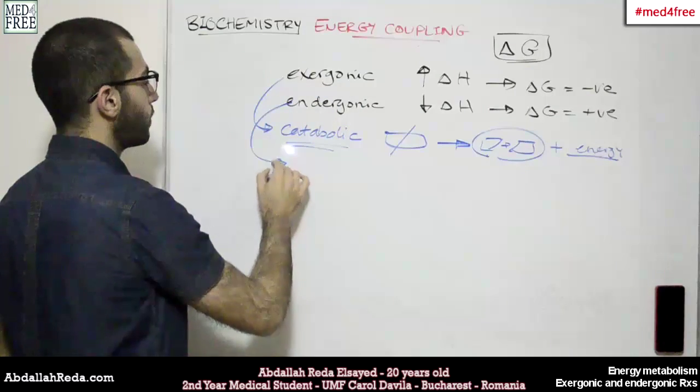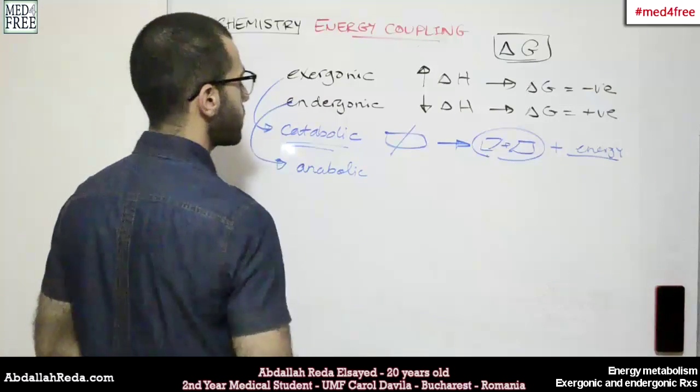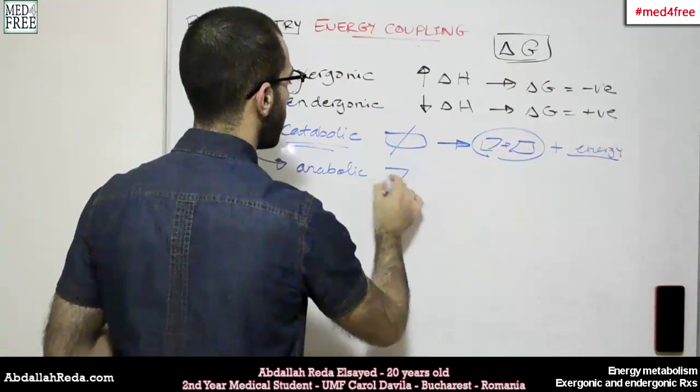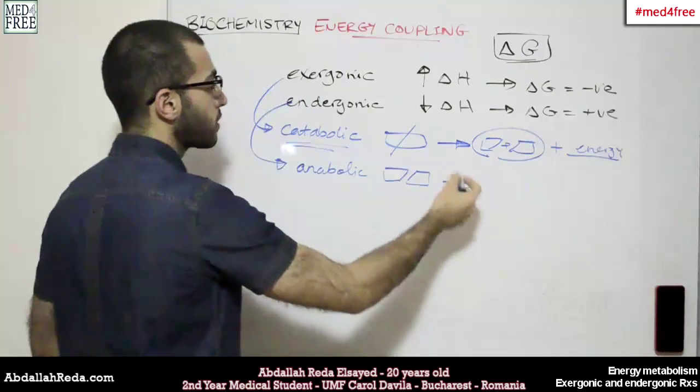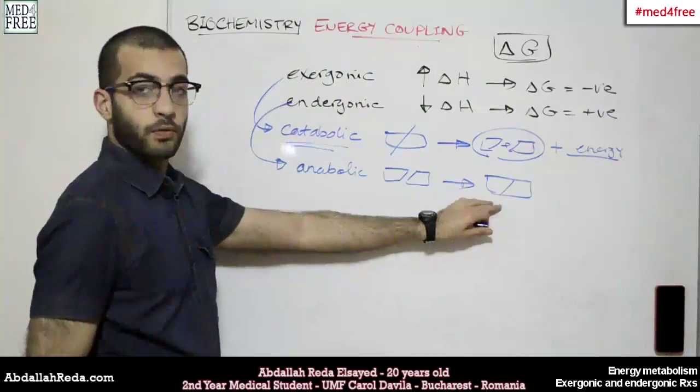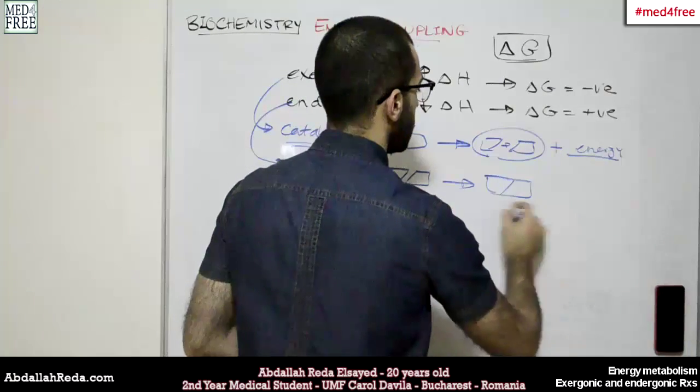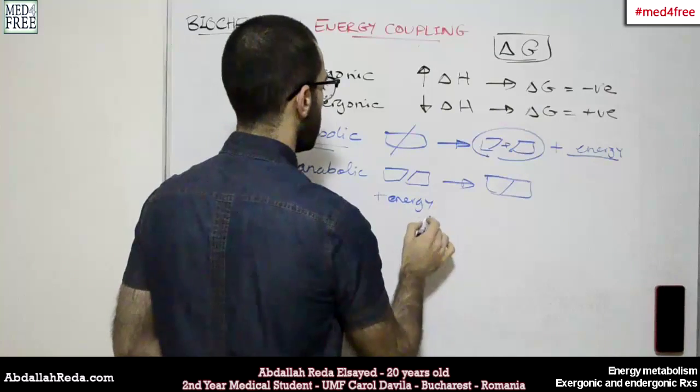While endergonic reactions are usually anabolic reactions. And matter of fact they're completely opposite to catabolic reactions. So they build up materials, and in order to perform that they need energy. So here we have energy as an input.